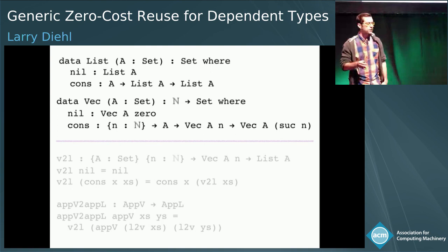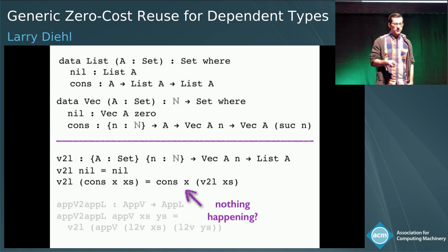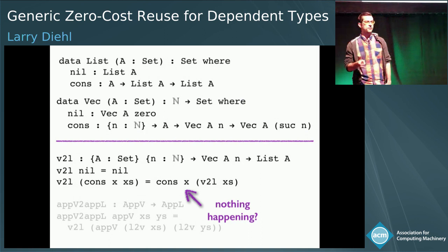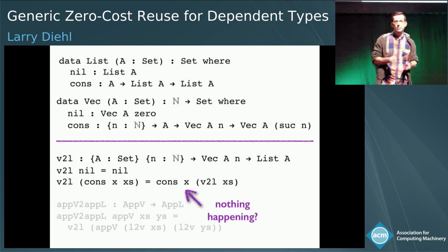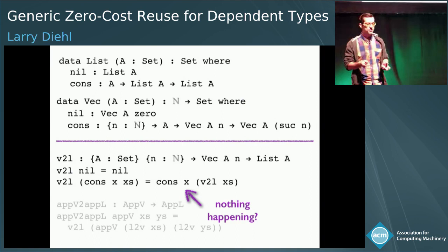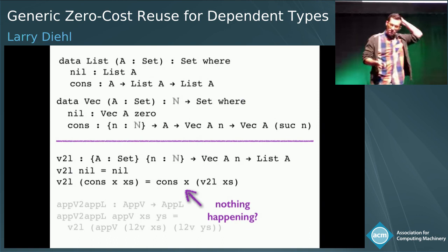For manual reuse, we're going to start in the Agda language. These are the standard declarations of the list and vector types in Agda. For data reuse, we want to write a function v2l that takes a vector and turns it into a list. If we stop for a moment and look at this function, intuitively it appears that nothing is really happening: nil goes to nil, cons goes to cons, maybe there's some recursion, but otherwise nothing's happening.